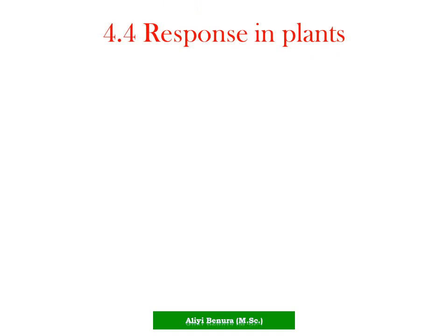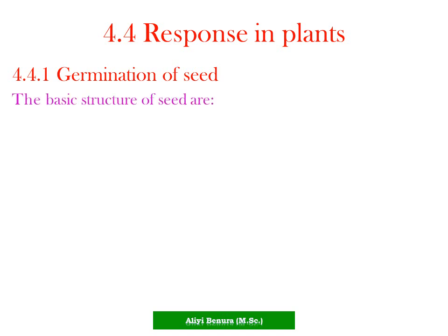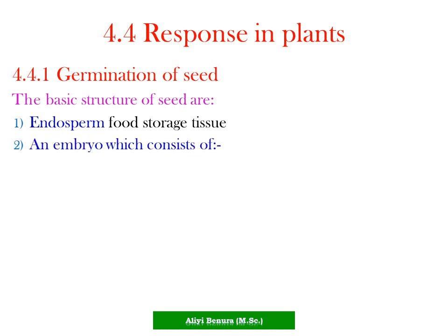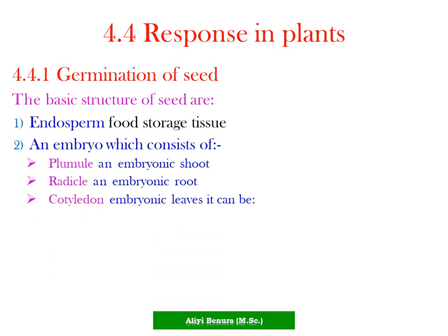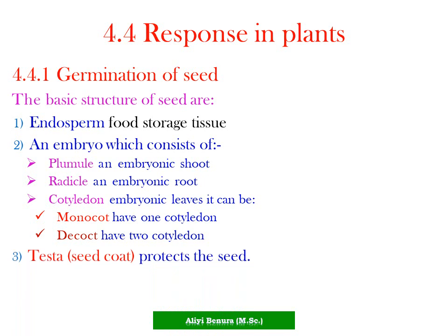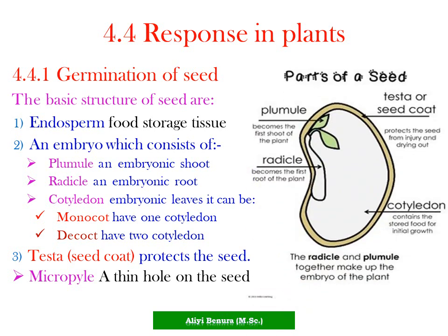4.4.1 Germination of Seeds. The basic structures of seeds are: one, endosperm - food storage tissue; two, an embryo which consists of plumule and embryonic shoots; three, radicle, which is the embryonic root; and cotyledon, which is an embryonic leaf. It can be monocot with one cotyledon or dicot with two cotyledons. The other is testa or seed coat, which protects the seed, and micropyle, a tiny hole on the seed.